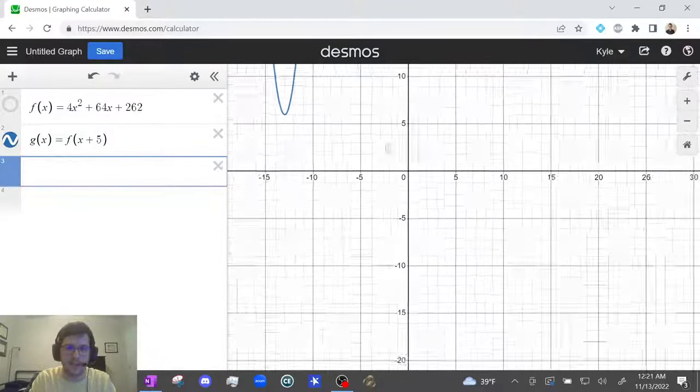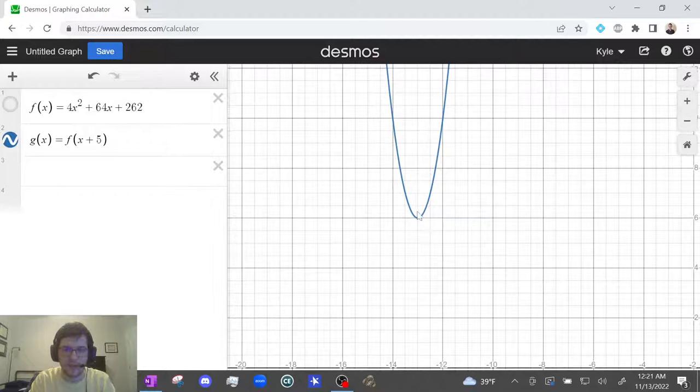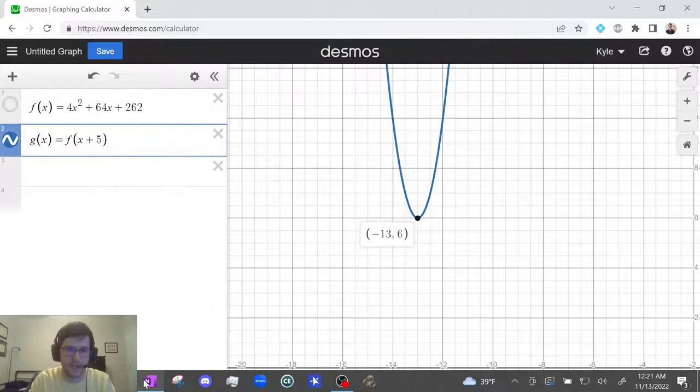And it wants to know the minimum. So we're gonna find the vertex again. Let's zoom out. It's over here. Vertex is over here. Let's click on it.